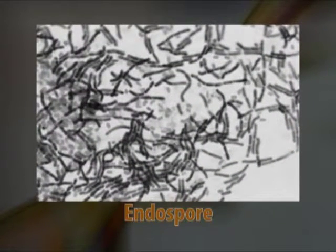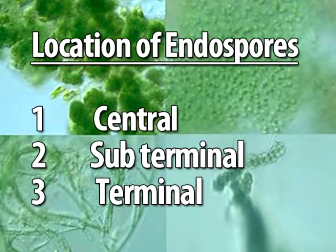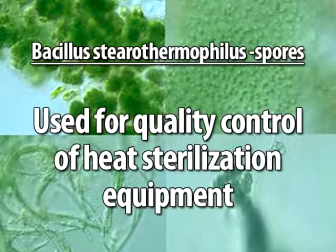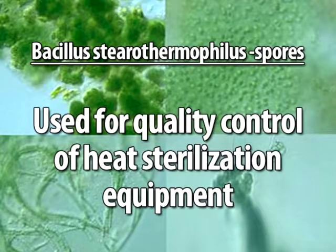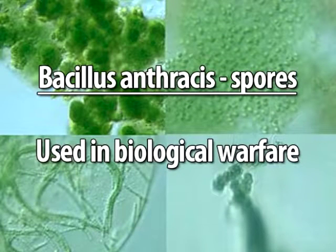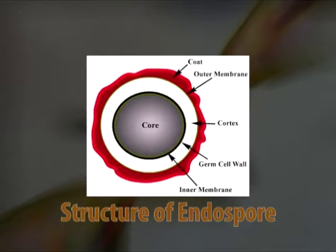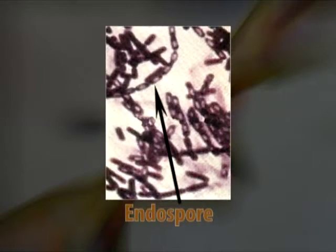Endospores are specific kinds of spores formed under very harsh environmental conditions and are highly resistant to heat, irradiation, cold, and other stresses — even boiling for one hour may not destroy them. It takes bacteria both time and energy to form these spores. Their location in bacteria — whether central, sub-terminal, or terminal — is important in classification. Endospores have specific uses: Bacillus stearothermophilus spores are used for quality control of heat sterilization equipment, and Bacillus anthracis spores are used in biological warfare.